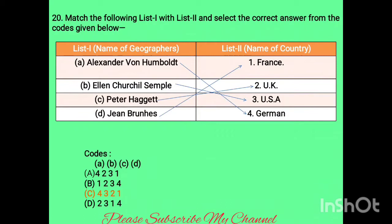Question twenty is a matching question. List one gives names of geographers; list two gives their countries. Alexander von Humboldt is from Germany, Ellen Churchill Semple is from the USA, Peter Haggett is from the UK, and Jean Brunhes is from France. The right option is option C.